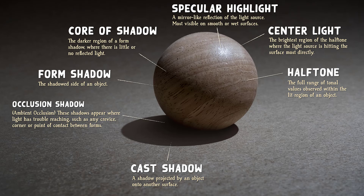Occlusion shadows, also known as ambient occlusion, appear anywhere light has trouble reaching, such as in tight corners or between crevices where forms come into contact. Of all the features of shadow, these are the most commonly overlooked by artists. While their effects may appear subtle, they go a long way towards making a scene feel more naturally lit.